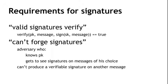The requirements for signatures, on a slightly more technical level, are two things. First, valid signatures will verify: if I sign a message with SK, my secret key, and someone later tries to validate that using my public key and the same message, it will validate correctly. This says that signatures are useful at all. But the second thing you want is that it's impossible to forge signatures — an adversary who knows your public key and gets to see signatures on some other messages can't forge your signature on a new message.